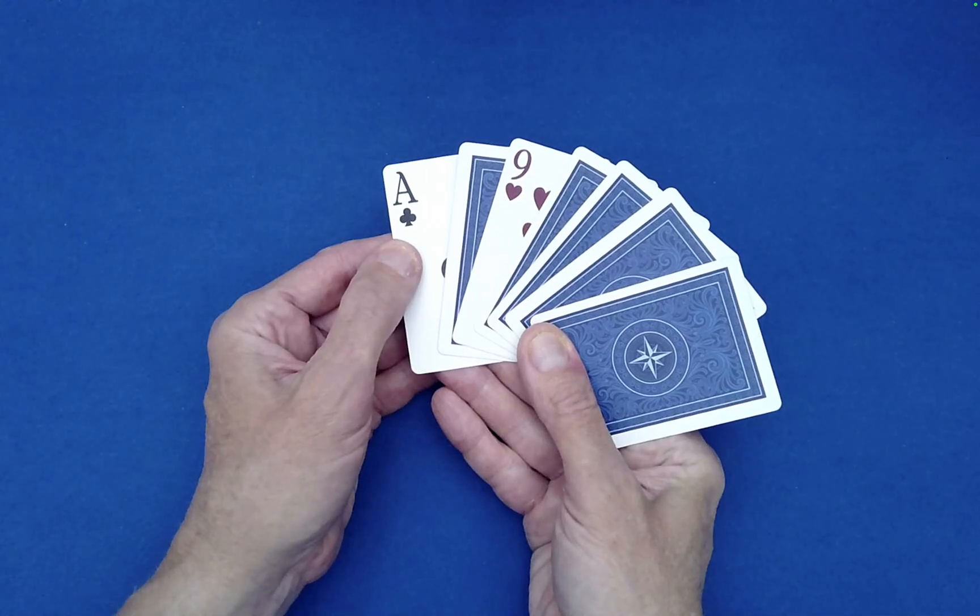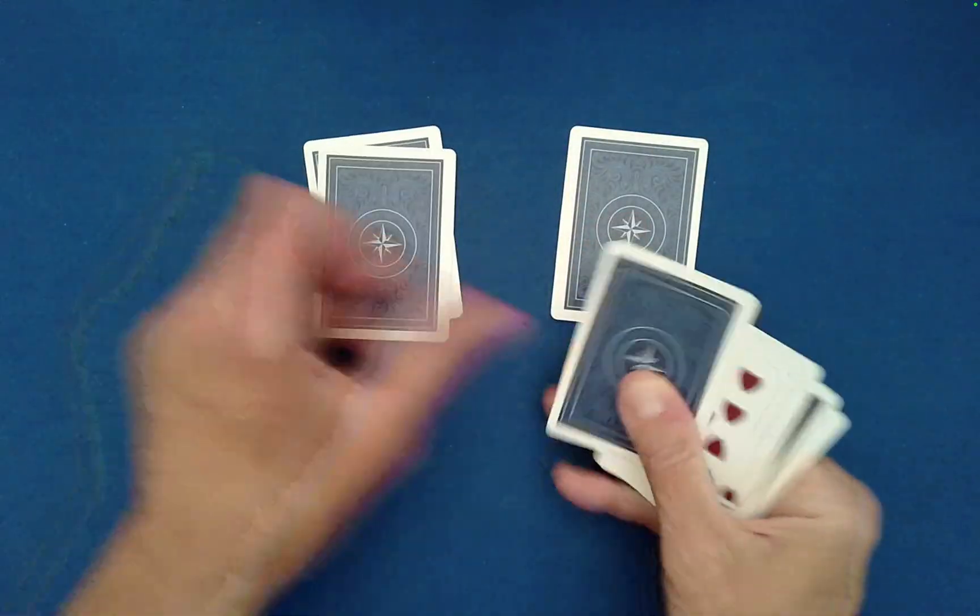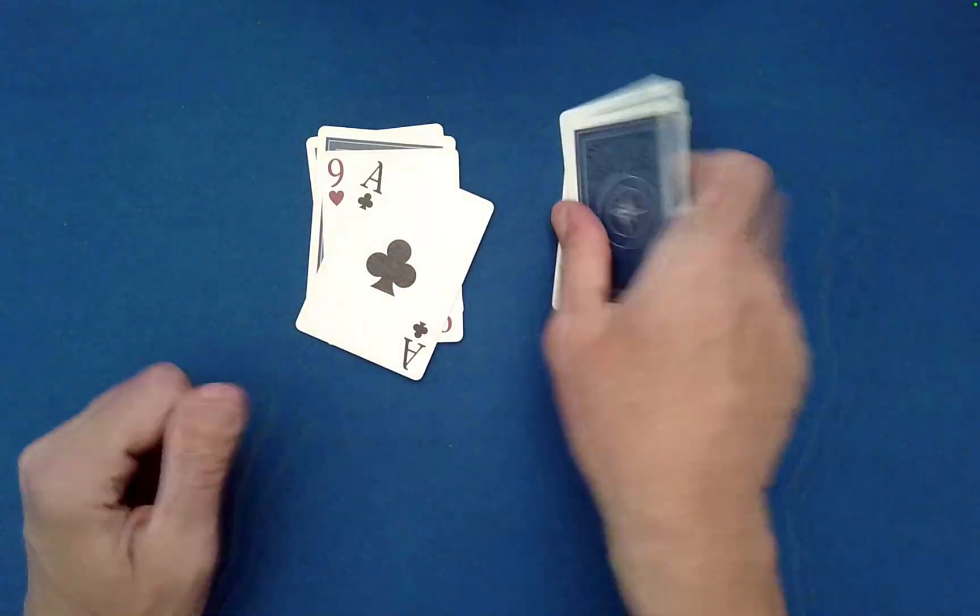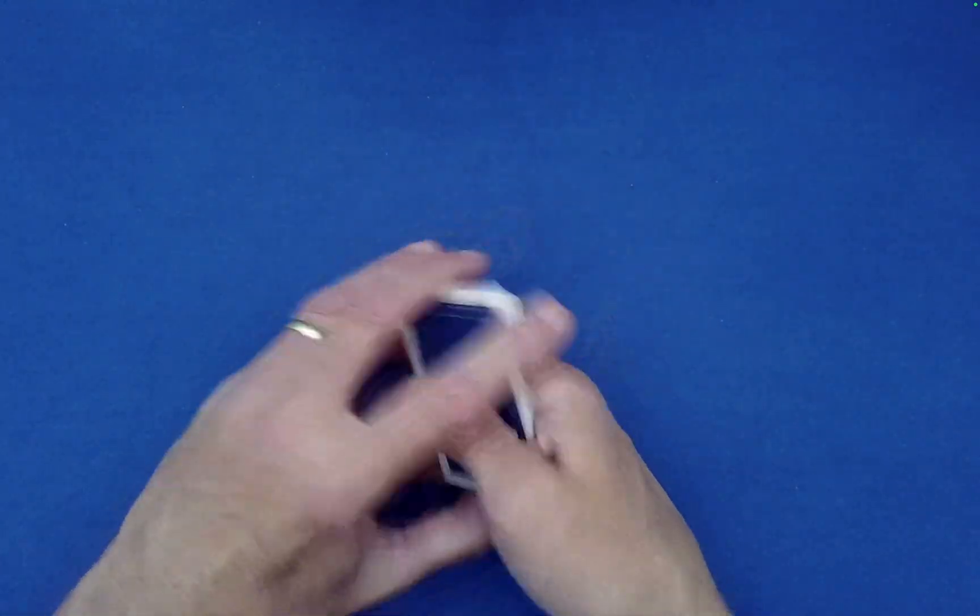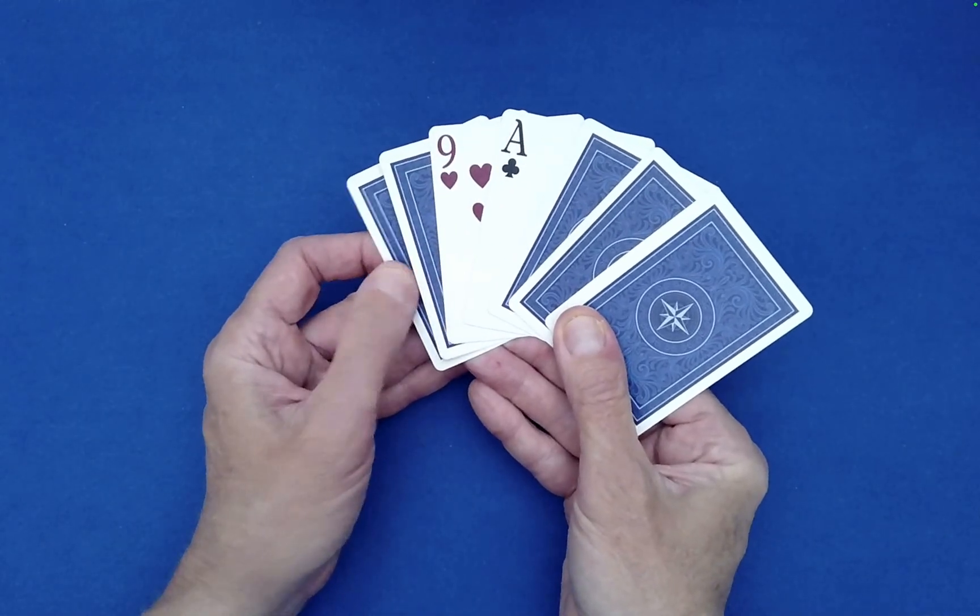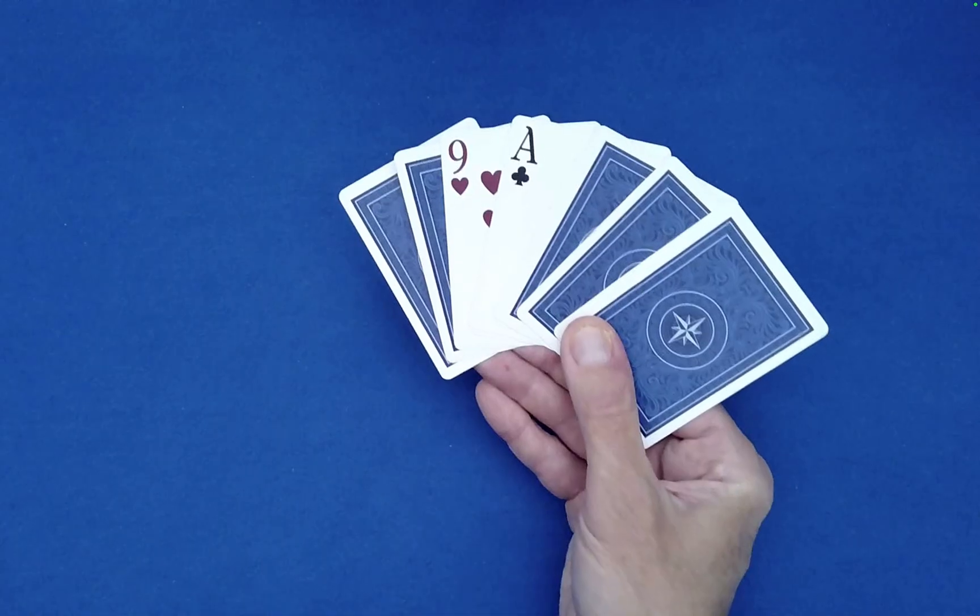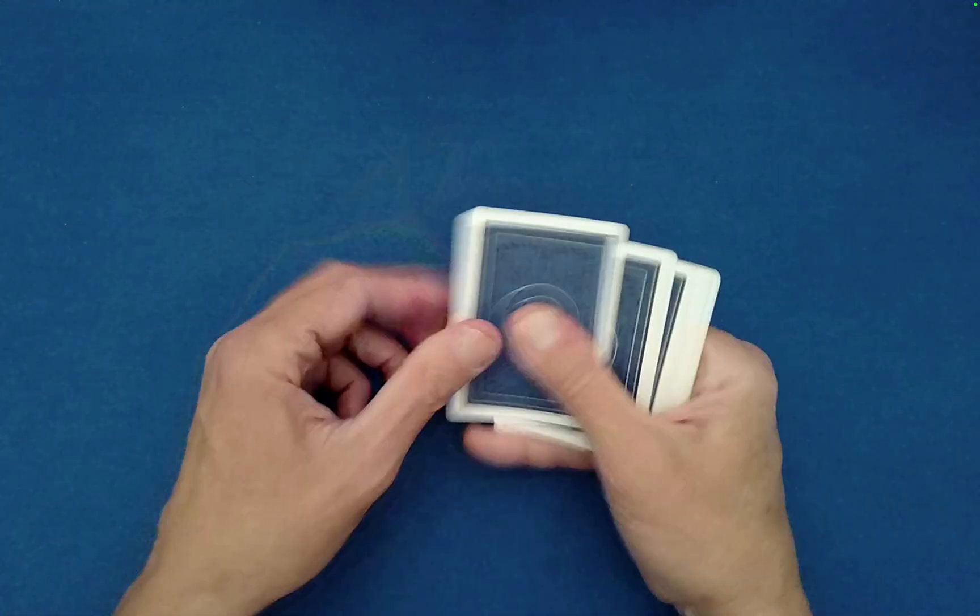So the ace is now on the bottom but where's the nine? It's fifth. We'll just do one more. Anyway, very clever little routine. Now the ace has moved, so now it's fourth, but guess what? The nine of hearts is fifth from the top.